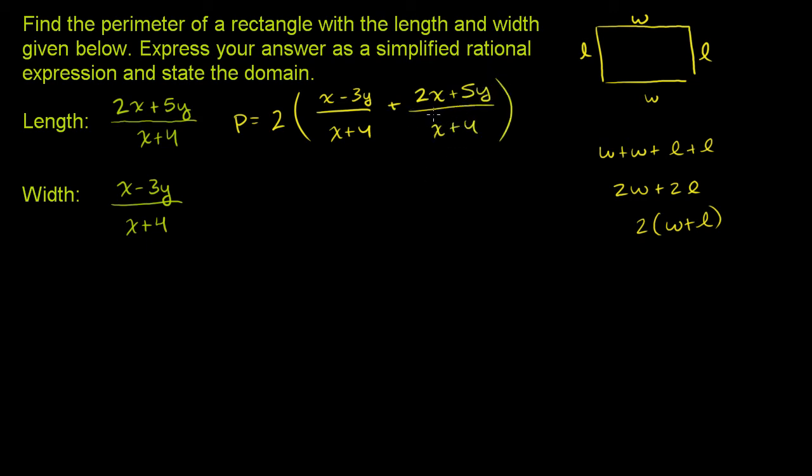Now let's add these two rational expressions. We have the same denominator, so we can just add the numerators. This is going to be equal to 2 times, and the denominator is x + 4. This problem wasn't too hairy - we didn't have to come up with a common denominator. We're going to have x - 3y + 2x + 5y in the numerator.